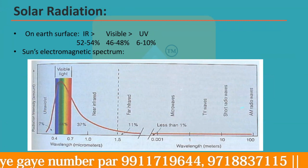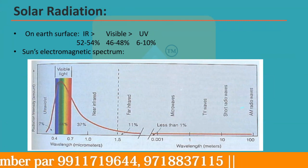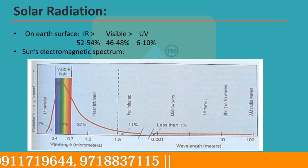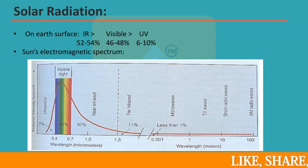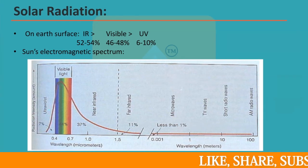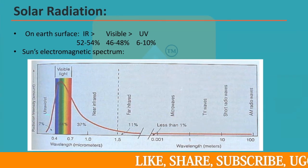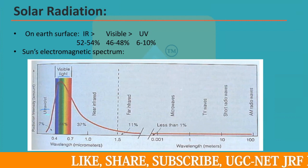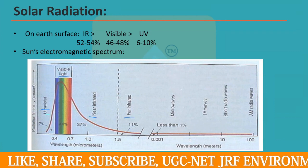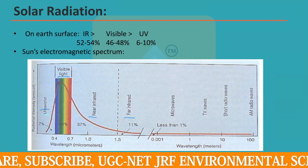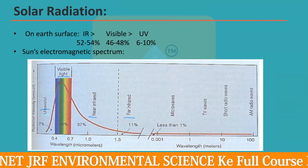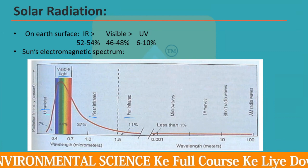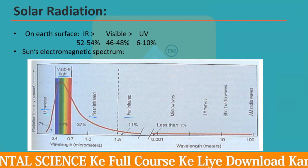Out of all the types of electromagnetic radiation in sunlight, which one is reaching the earth's surface in the highest amount? The sun's radiation includes ultraviolet radiation, visible light, and infrared radiation. These are all the different types of electromagnetic radiation found in sunlight, and we need to determine which reaches the earth's surface in the greatest quantity.